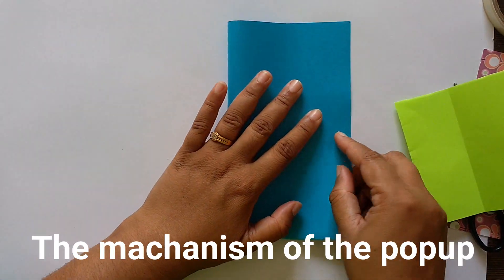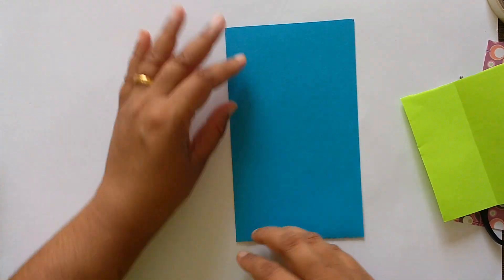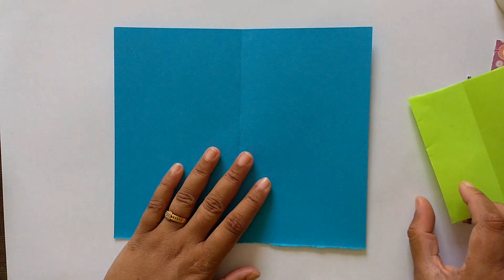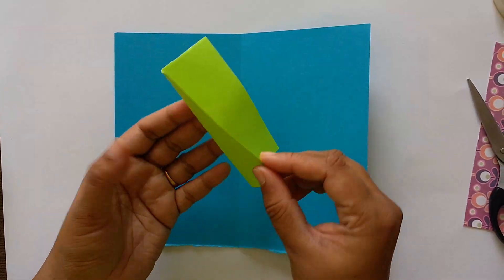Fold it in half. Now we want to make the pop-up, so we will take a piece of card.